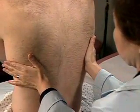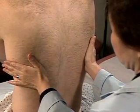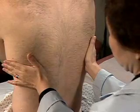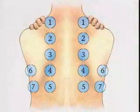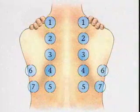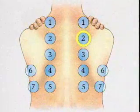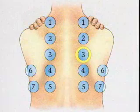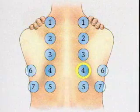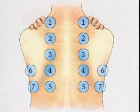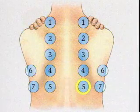Identify areas of increased, decreased, or absent fremitus. Continue the examination by percussing the chest in a systematic manner, going from side to side as you move down the thorax.